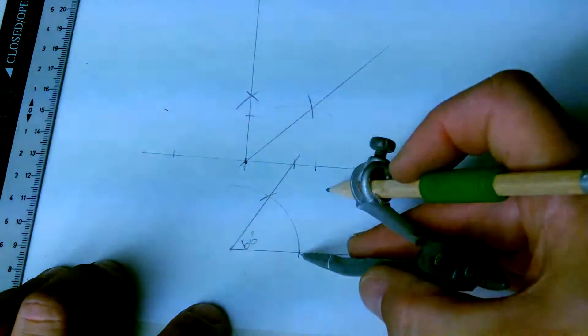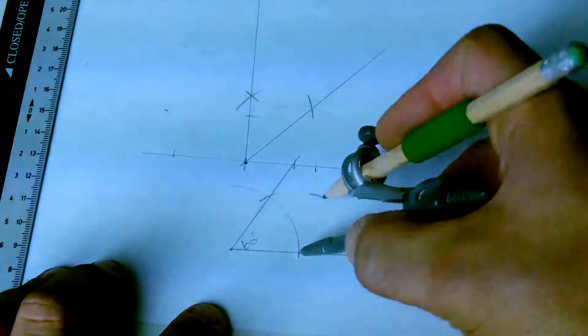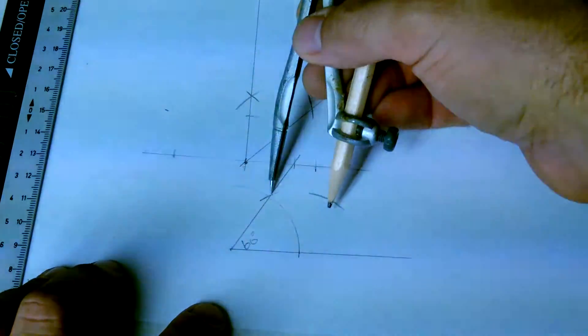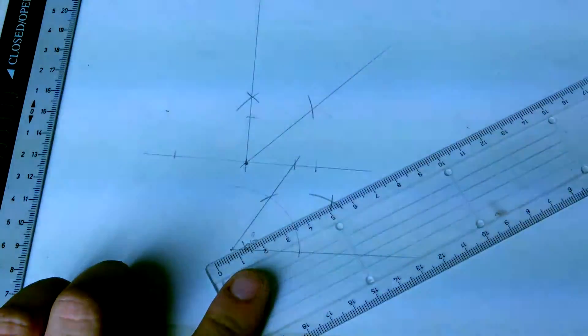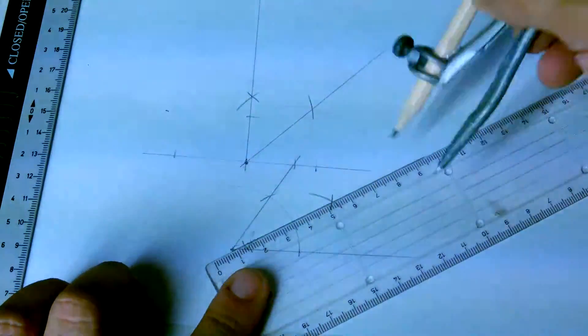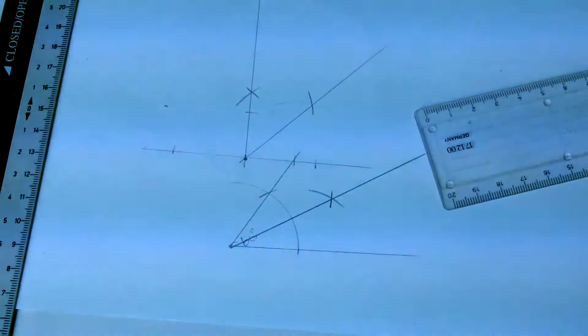If you bisect this, go from this point, mark somewhere in between, and from this point you will bisect the 60 degrees to get a 30 degree angle using only the compasses.